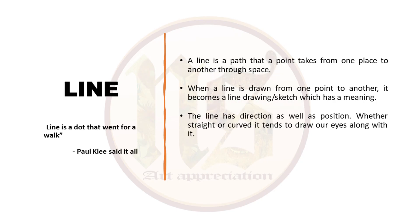Now we come to line. Paul Klee, a very popular modern artist, has said, line is a dot that went for a walk. To define line, we can call it a path that a point takes from one place to another through space. When a line is drawn, it becomes a line drawing or a sketch which may or may not have a meaning. The line has direction as well as position. Whether straight or curved, it tends to draw our eyes along with it.